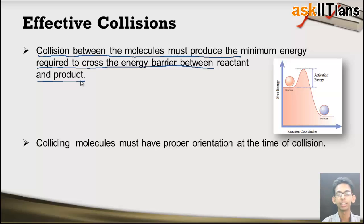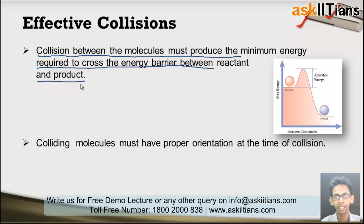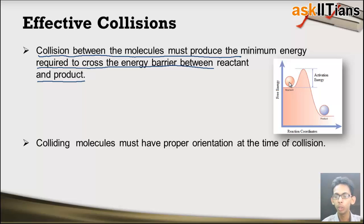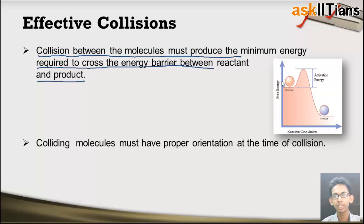This energy barrier is known as activation energy. We know that for every reaction to take place we require a minimum amount of energy — a minimum amount of energy must be supplied to the reactants so that the reaction takes place. This minimum amount of energy is known as activation energy. We must provide this activation energy to the reactants so that they cross this energy barrier and convert into product. This energy comes from collision — the reactant molecules collide and get the energy required for the reaction. So if the reaction is to take place, the collision between the reactants must produce energy equal to or greater than the activation energy.